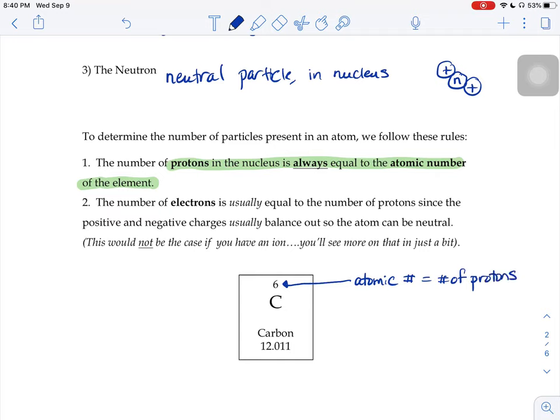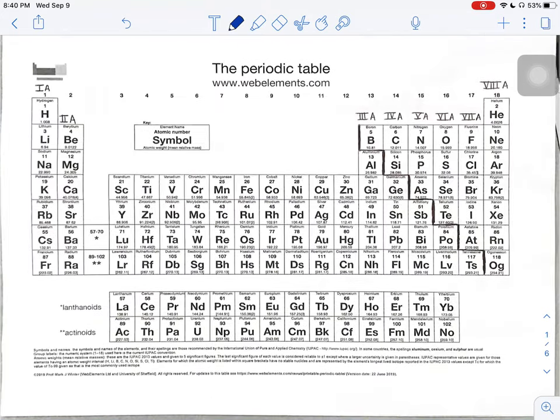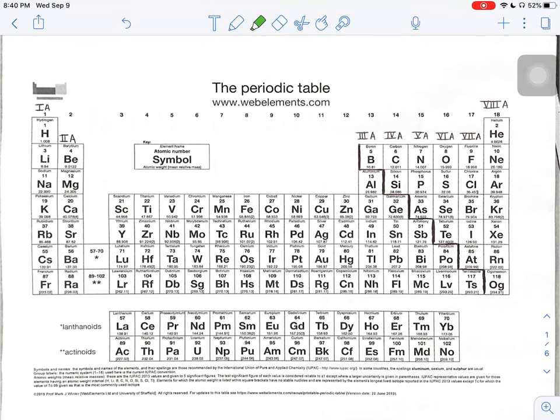So all atoms of carbon have six protons. If I were to scroll up here and we looked at another element, if I said tell me about gold right here, gold has 79 protons.